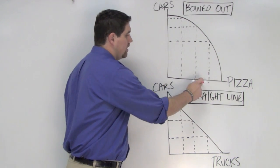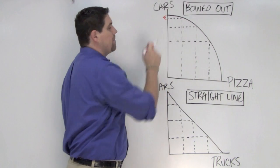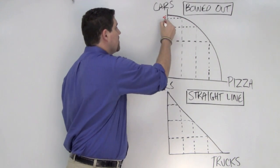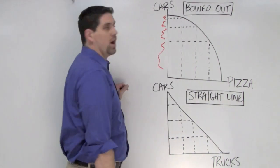As you produce more and more pizza, you have to give up more and more cars. So this very first unit of pizza, I give up that many cars. The second unit of pizza, I give up that many cars. The third unit of pizza, I give up that many cars. And the last one, I give up all those cars.